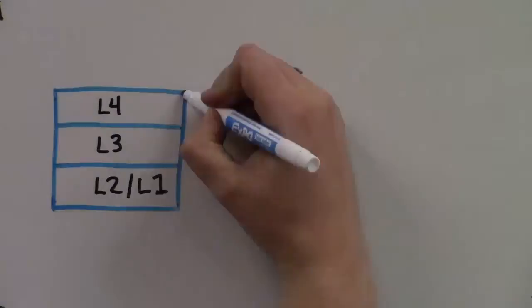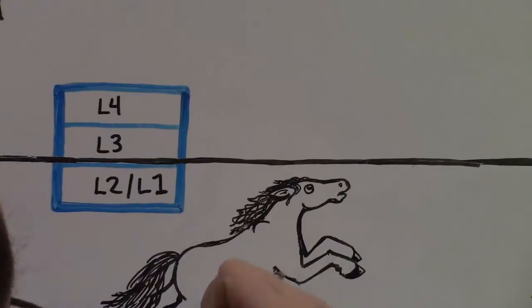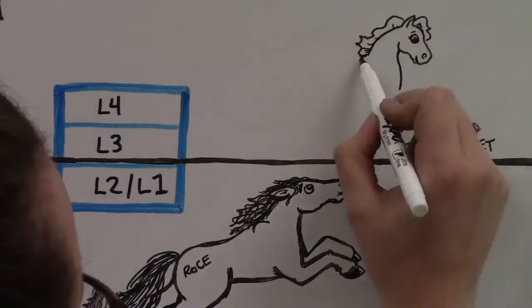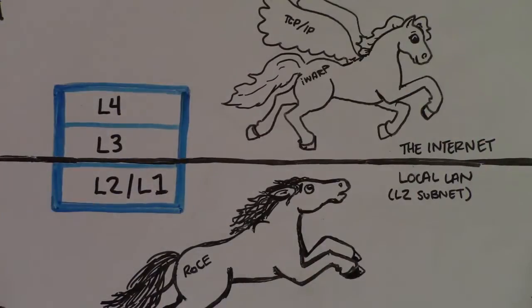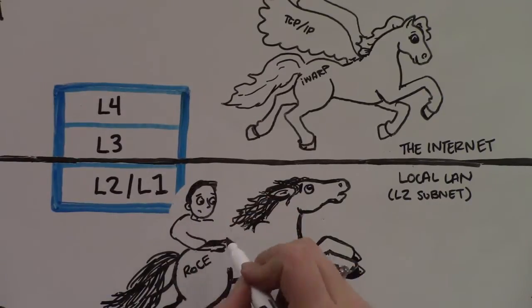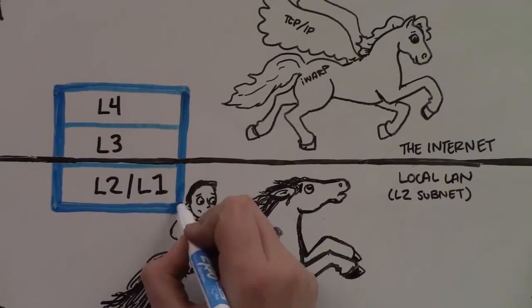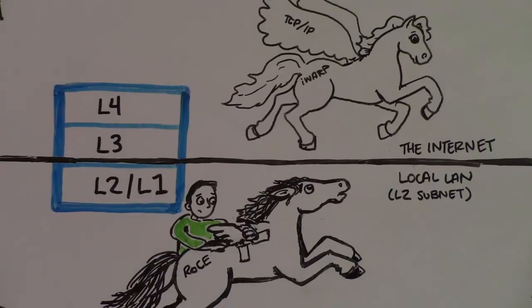Another key advantage of iWARP is that, riding on TCP/IP, it is routable, meaning it can leave the L2 subnet and fly across the Internet through L3 routers. The original RoCE is grounded. Recognizing this deficiency, the RoCE community has recently released a specification for RoCE V2 that does add routability. However, they didn't use the TCP transport. Rather, they picked UDP, which provides no reliable delivery or congestion management during routing.